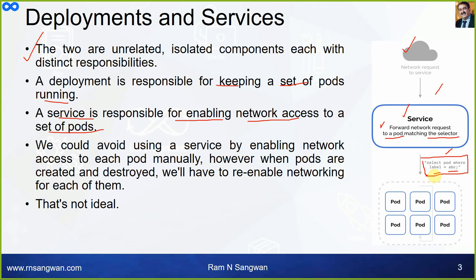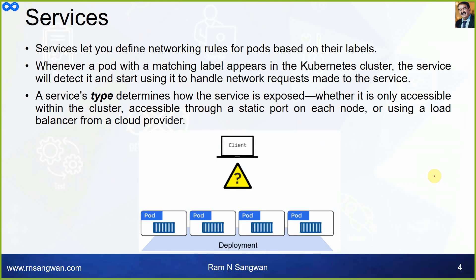We could avoid using a service by enabling network access to each pod manually, but that is not an ideal situation. When pods are created and destroyed, we would have to re-enable networking for each of them. It's better to create an independent, isolated resource and attach it to the pod so that it is available whenever the pod is active, by means of that label selector. Services let you define networking rules for pods based on their labels.